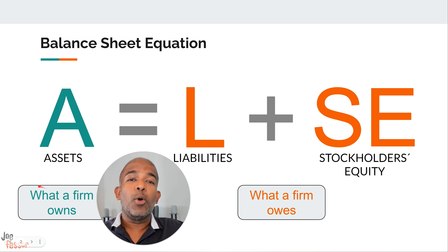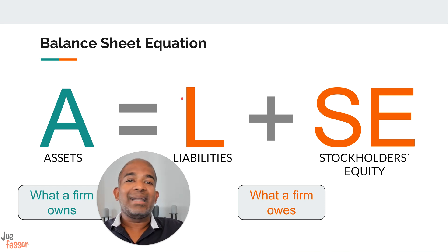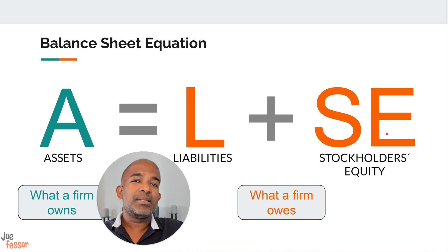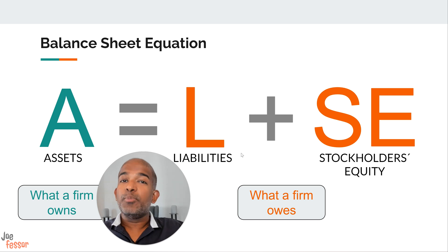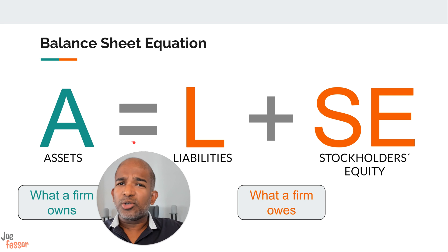On the right side, we have liabilities and equity. Liabilities are what the firm owes to its creditors, like loans, accounts payable, and any other outstanding debts. Equity represents the owner's stake in the company - their investment and any profits the business has retained. The beauty of this equation is its simplicity: everything a company owns must be balanced by what it owes to others or its owners. It's the cornerstone of double entry bookkeeping, the system we use to track debits and credits.